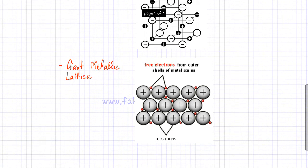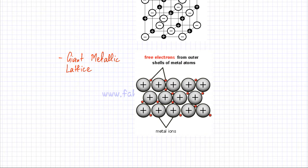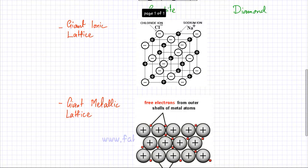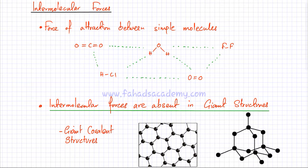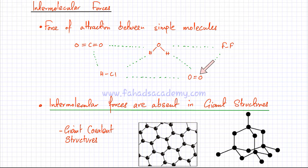The same applies to giant metallic lattices, where positive metal ions exist in a sea of free-moving delocalized electrons — the electrons act as a glue keeping the positive ions together. It is one huge structure with no gaps or separate things. So the concept of intermolecular forces only applies to simple molecules like CO2 or H2O.